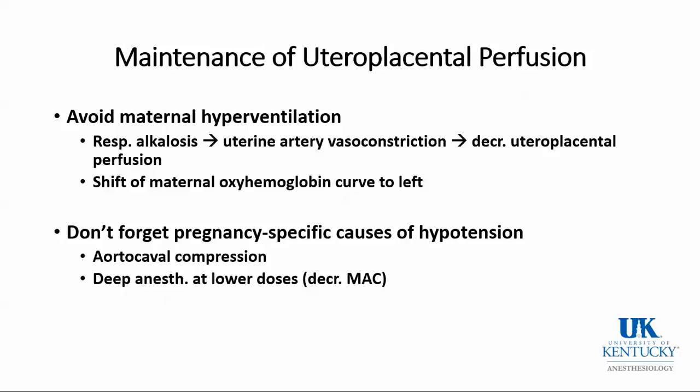You also want to avoid maternal hyperventilation. If the mother develops a respiratory alkalosis, this will lead to uterine artery vasoconstriction and ultimately to decreased utero-placental perfusion. Additionally, hyperventilation shifts the maternal oxyhemoglobin dissociation curve to the left, making oxygen unloading to the fetus more difficult. Maintain normal blood pressure to ensure adequate utero-placental perfusion, and think about pregnancy-specific causes of hypotension such as aortocaval compression.